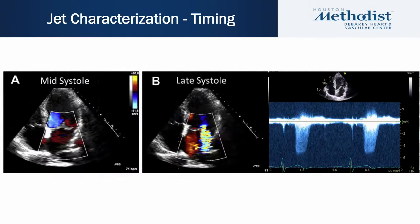Switching to quantification of MR — JET characterization and determining the timing of the jet is very important. An example of leaflet prolapse shows little MR in early or mid systole, with MR appreciated only in late systole. When reading an echo, always mention the timing of the jet because that plays into the significance of the lesion.